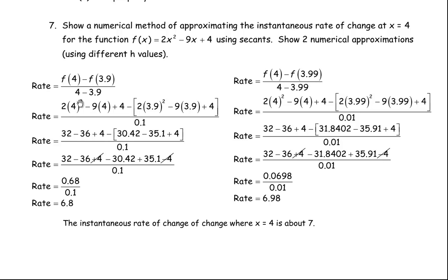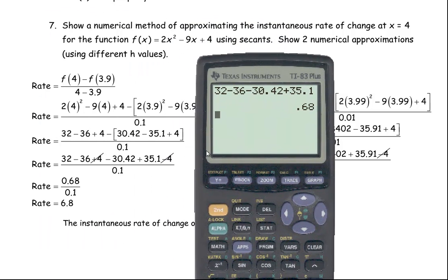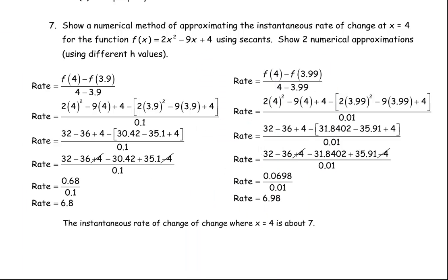4 squared is 16 times 2 is 32, and 9 times 4 is 36, so minus 36, plus 4. For 3.9 squared times 2 is 30.42, and negative 9 times 3.9 is minus 35.1, plus 4. Taking the brackets off changes all the signs. The 4 and negative 4 cancel. So we compute 32 minus 36 minus 30.42 plus 35.1, which gives 0.68. The denominator is 4 minus 3.9 equals 0.1. So 0.68 divided by 0.1 is 6.8 — that's the approximation for the instantaneous rate of change.